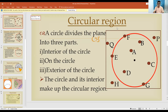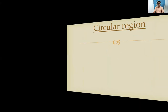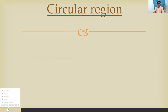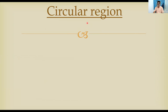Today we are going to learn about a circular region and some other concepts. What is a circular region? Region means a place which belongs to a particular person or a particular shape. So what is a circular region? It is the place which belongs to the circle.